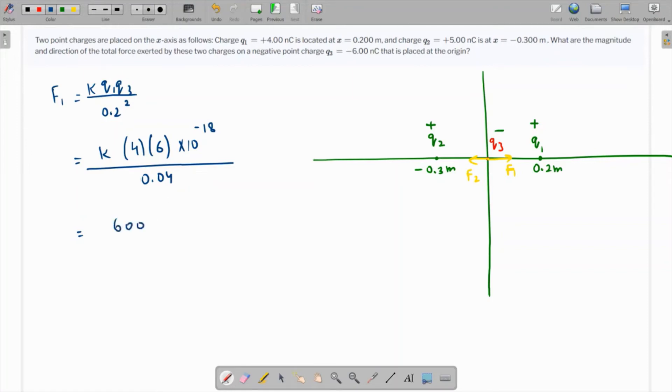Likewise, the value of F2 is going to be k times q2, which is 5, and q3 is 6, times 10 raised to minus 18 over 0.3 squared. This is 6 times 5 is 30, so we have 30 over 0.3 squared which is 333.33.